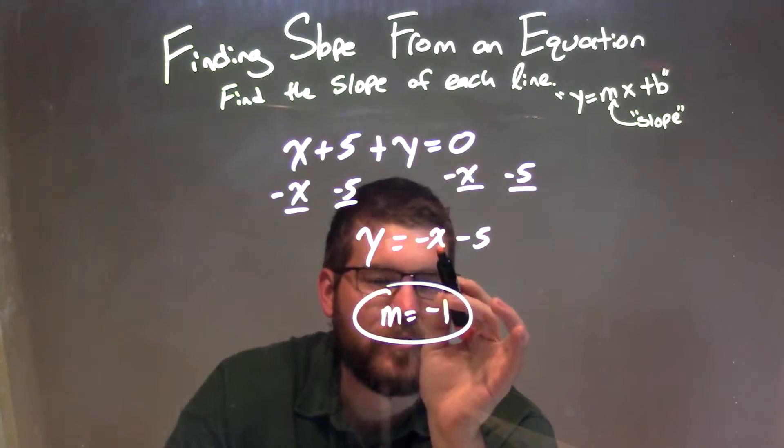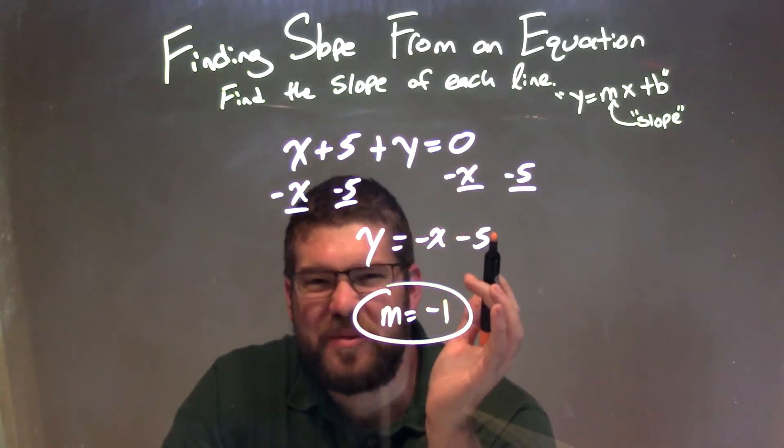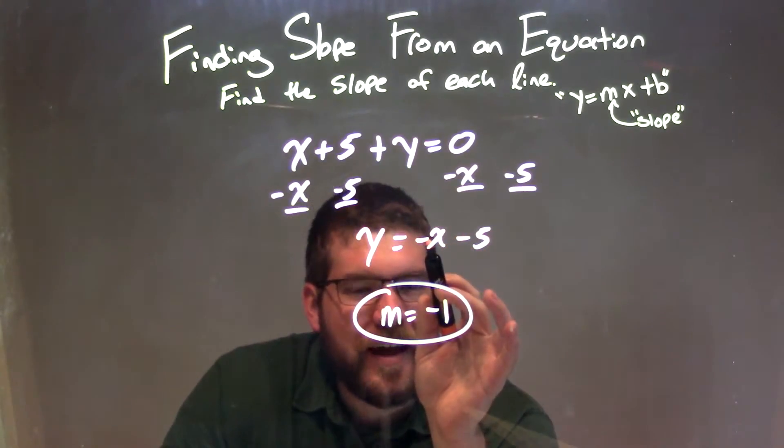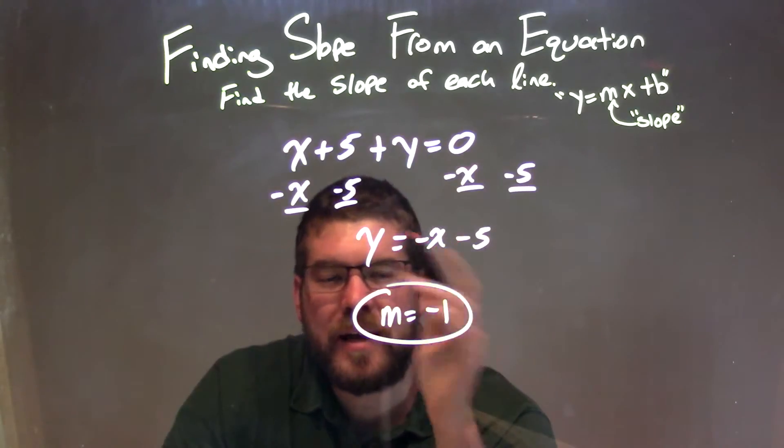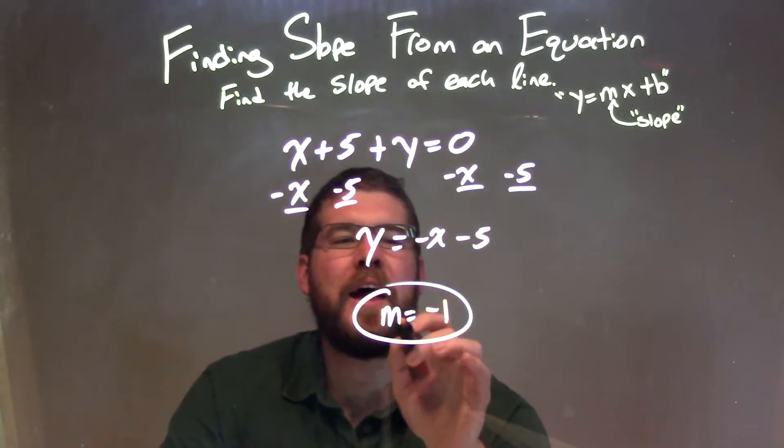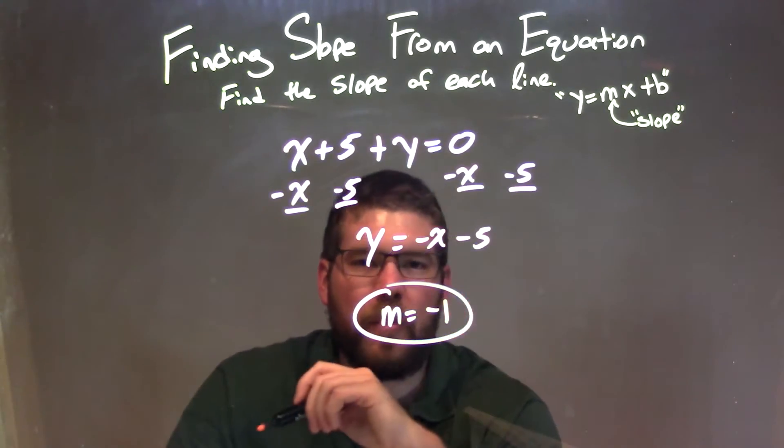So negative 1 times x. We just don't normally write that. So we identify that it's a negative 1 right there, and so our final answer and the slope that we're looking for is m equals a negative 1. So let's try this one.